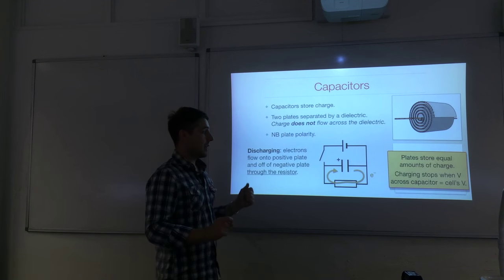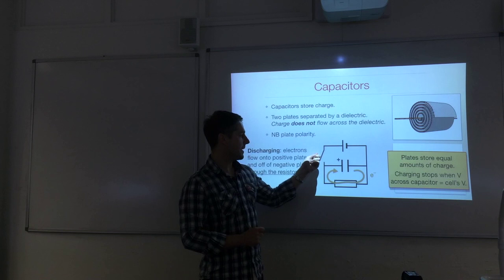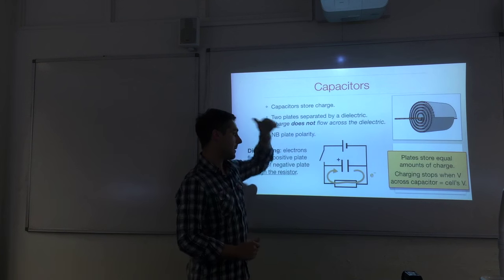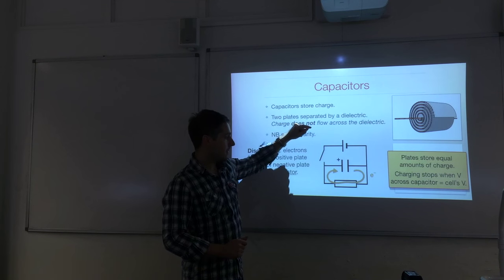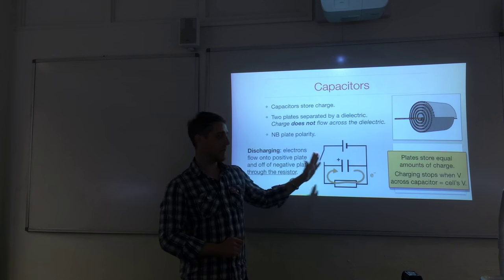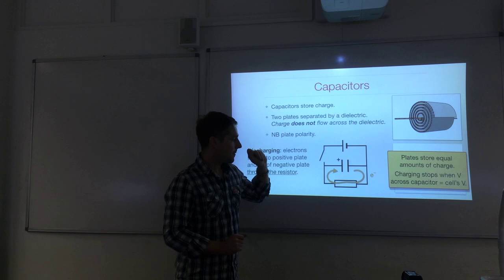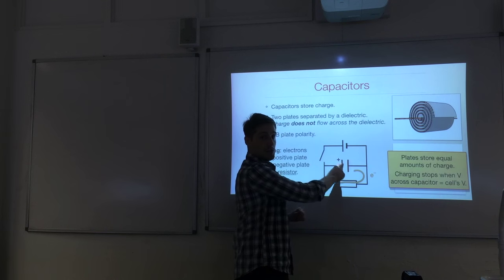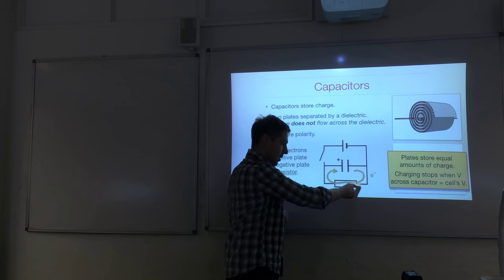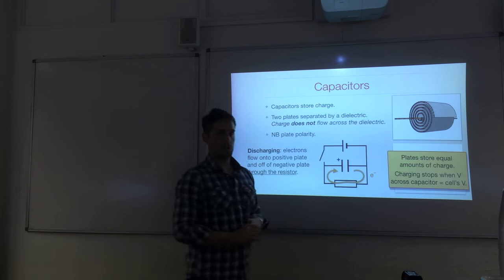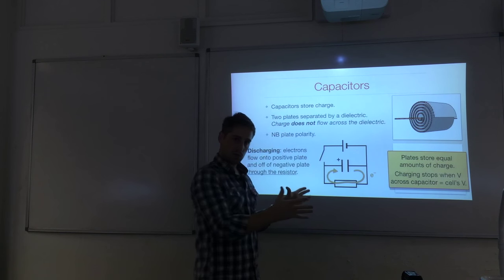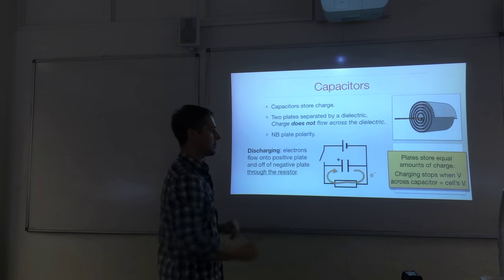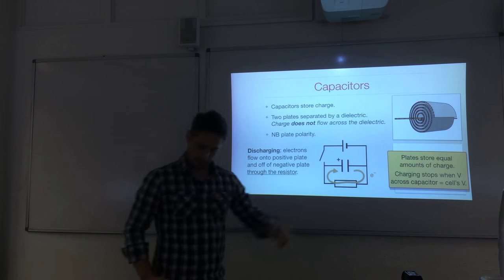During discharging, when we open the switch, charging stops and discharging starts. The electrons that had accumulated on the negative plate flow through the resistor to the positive plate, because the circuit wants to become neutral again. The negative charge accumulated flows around to cancel out the positive charge. Conventional current flows in the opposite direction.